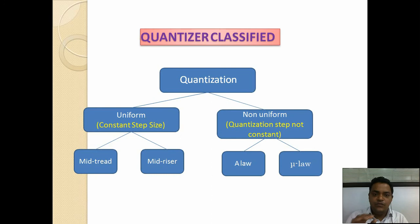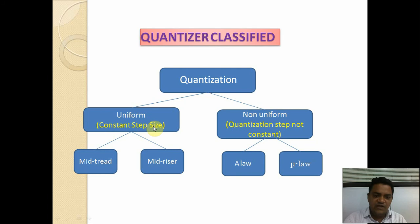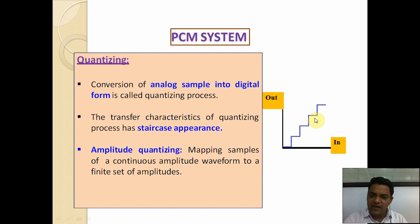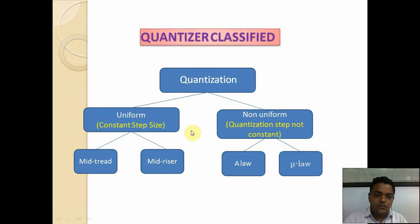Quantization is classified into two types: first is uniform quantization, and second is non-uniform quantization. In uniform quantization, the step size is constant — as seen in the transfer characteristics, the step size remains constant throughout. In non-uniform quantization, the quantization step is not constant; it varies according to the input information-bearing signal.